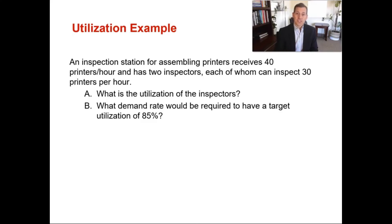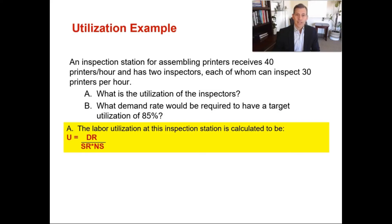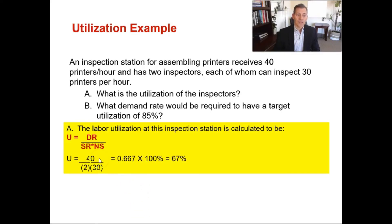Back to the printer inspection example: 40 printers per hour arrive, with 2 inspectors each capable of 30 printers per hour. Utilization = 40 / (30 × 2) = 40 / 60 = 66.7%. The inspectors have spare capacity since they can handle up to 60 printers per hour but are only receiving 40.